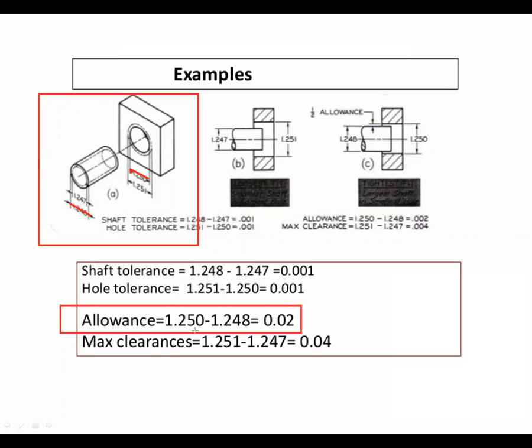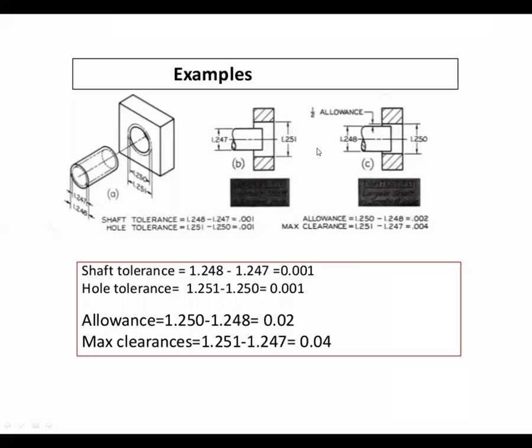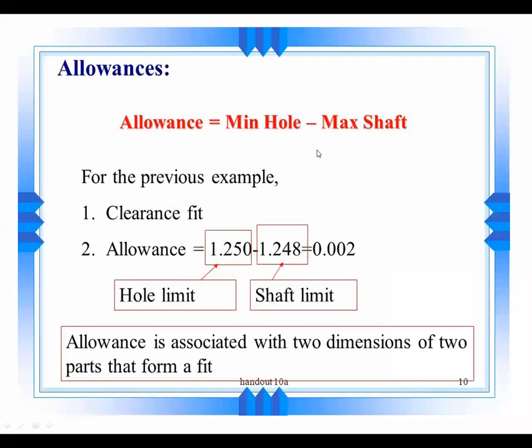The allowances are 0.02. 0.02 millimeters means a very, very small distance. So this is the allowance.